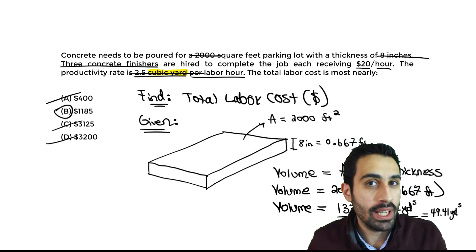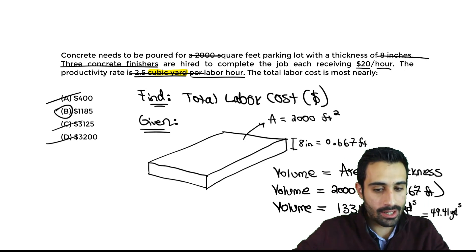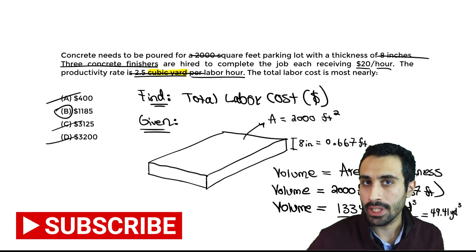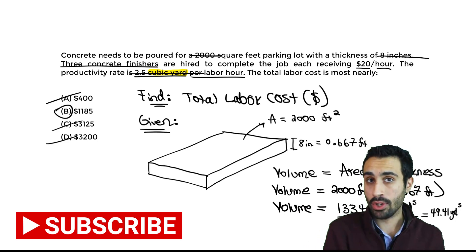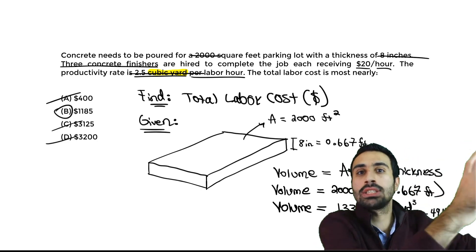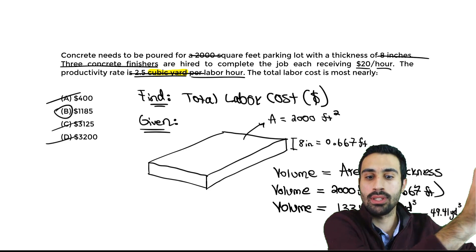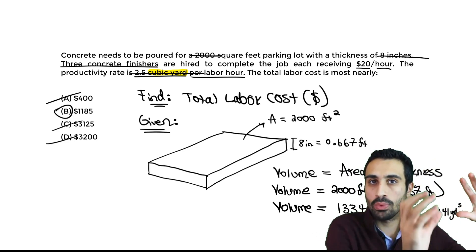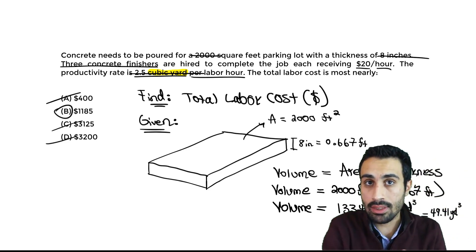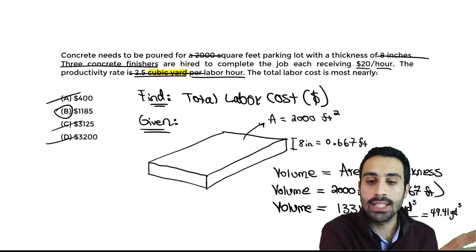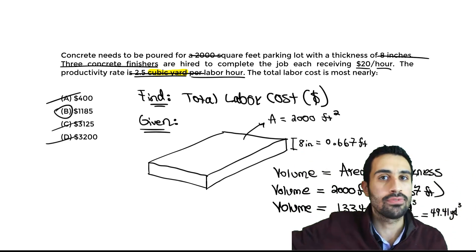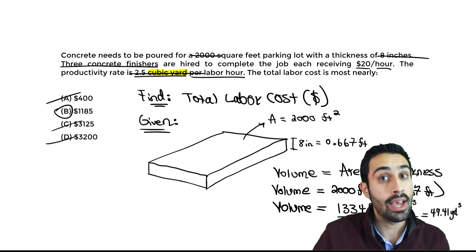This one isn't so bad. The key here is knowing that the area times the thickness will give us the volume of concrete that we need to pour for that parking lot. Then with that volume, that's the starting value we start with. Then we will play around with the conversion factors that were given in the problem statement and finally get that final answer for the total labor cost.